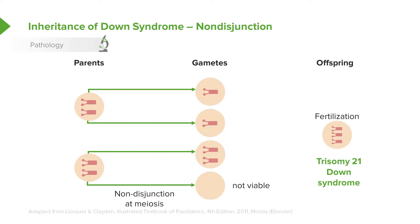So how does this happen? The most common cause, about 94% of the time, is non-disjunction. Basically, one parent creates two normal gametes, and the other parent creates one gamete with two copies, and the other one simply isn't viable. Then, through a freak occurrence, the gamete with two copies fertilizes a normal egg, or the egg has two copies and is fertilized by a normal sperm. This results in a patient with three copies of the 21st chromosome.